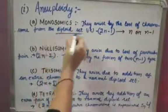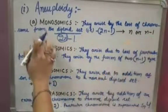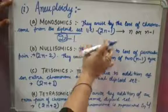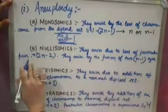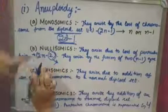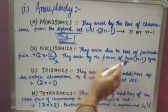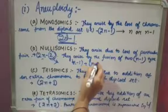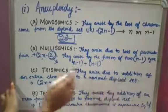The four types of aneuploidy are monosomic, nullisomic, trisomic, and tetrasomic. Monosomic arises due to the loss of one chromosome from a diploid set, giving 2n minus 1. Nullisomic arises due to the loss of a particular pair from the diploid set, giving 2n minus 2, arising by the fusion of n-1 with n-1.